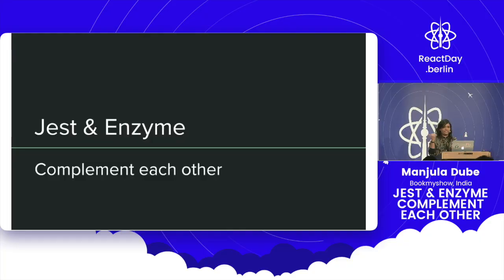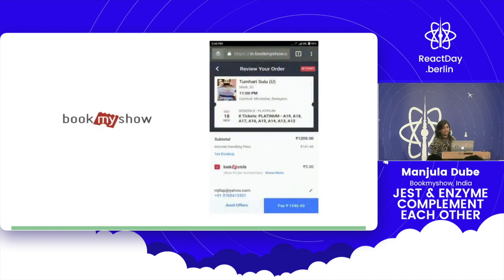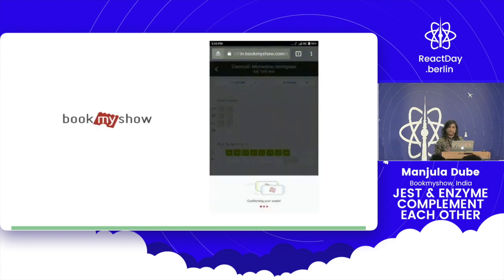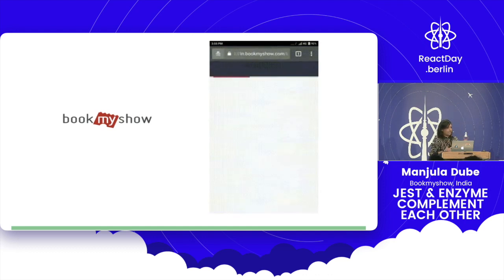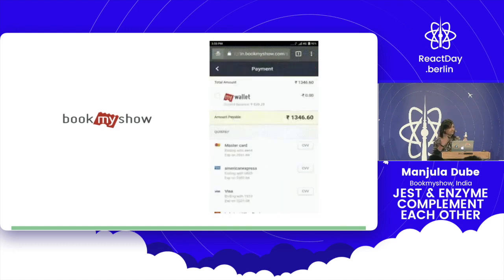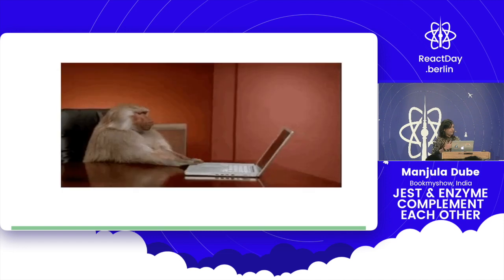So how many of you are using Jest and Enzyme at production? Great number. I hope the rest of you will start using after my talk. I'm traveling all the way from India, and I'm a senior developer at BookMyShow. BookMyShow is India's largest movie ticket-selling company, connected to 2,500 screens all over. Only a single file serves that layout, so testing is very important for us.